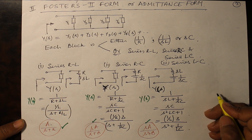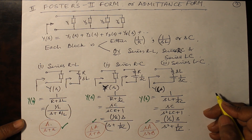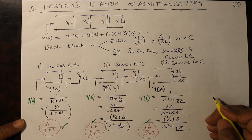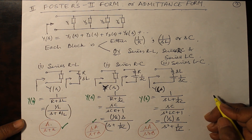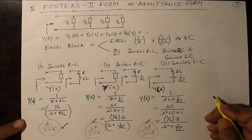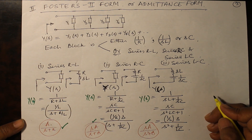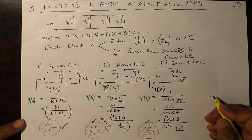In the examination you will definitely get a question on Foster's Form 1 and Form 2, and also on Cauer's C1 and C2 forms, likely worth 12.5 marks. By completing this video and the next one you are sure to get those marks. Attempt this as the first question in your exam because it is the easiest to solve, very technical, with very little chance of making a mistake. Getting full marks on the first question builds confidence for the rest of the paper.